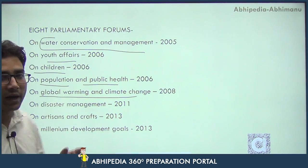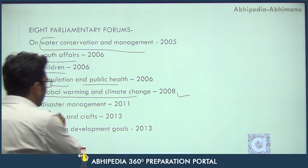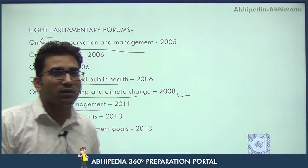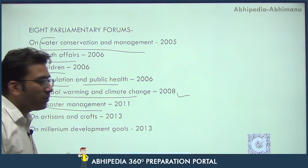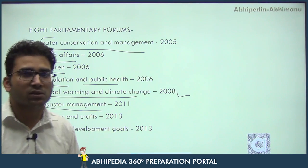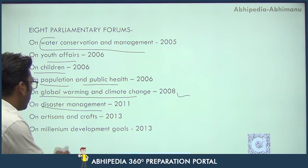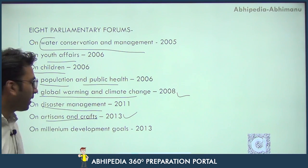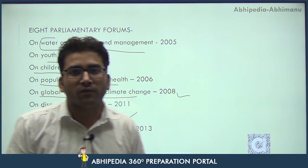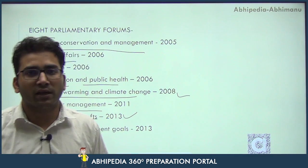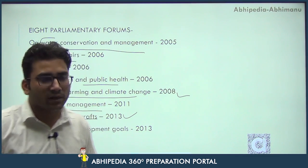Global warming and climate change is one of the highly important topics for UPSC in Prelims as well as Mains, and this forum was constituted in the year 2008. Then on disaster management — India is a disaster-prone country; our northeast, hilly areas, south, and western areas are very much prone to disasters. Numerous discussions happen in this forum on guidelines, prevention, and mitigation measures for controlling disasters. Then on artisans and crafts — this covers how to enshrine and conserve traditional arts, monuments, and crafts like handicrafts. We have numerous schemes also on conserving our handicraft materials and items.